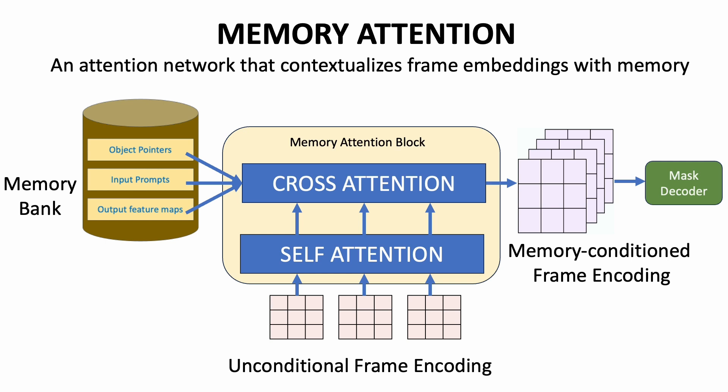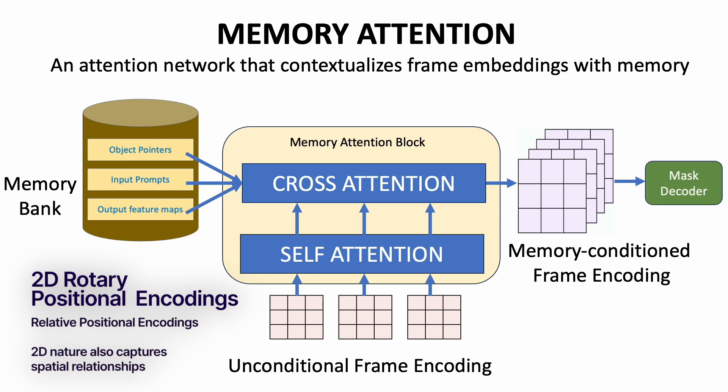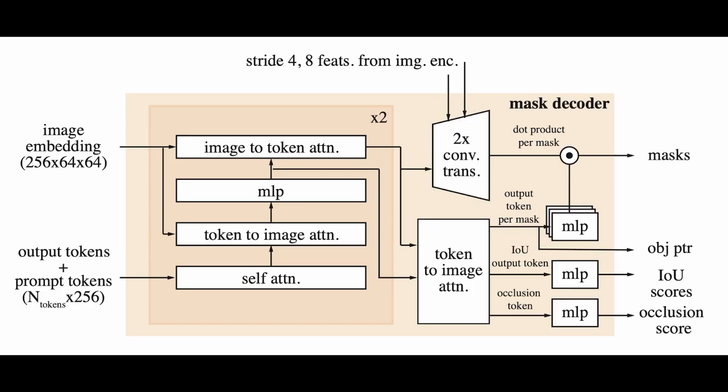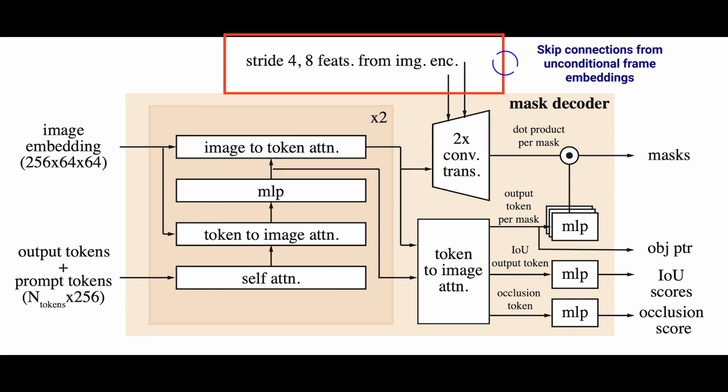During the self-attention and cross-attention layers, in addition to the usual sinusoidal position embeddings, 2D rotary positional encodings are also used. Rotary positional embeddings capture relative relationships between corresponding frames, and in 2D they help model the spatial relationship between frame encodings both horizontally and vertically. This allows the mask decoder to look back at previous prompts and predicted masks to pick out relevant information and generate the mask for the latest frame. SAM2 also uses skip connections that directly connect image encoder embeddings to the memory attention output so high-resolution image information can flow through during mask decoding.